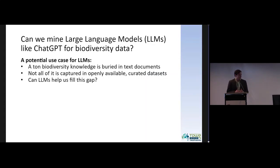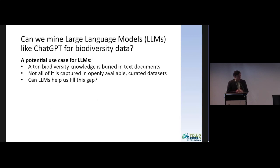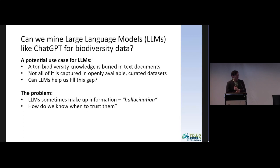This makes us wonder: can we actually mine large language models like ChatGPT for biodiversity data, or for whatever information they have stored in their memory? ChatGPT and other models can answer these questions because they're trained on essentially all of the internet — as much text as they possibly can get — including a lot of scientific and non-scientific sources, and apparently a lot of biodiversity information. This is exciting because not all of the information that ChatGPT knows is available in curated datasets. There's a gap between our curated datasets and the information contained in all the text on the internet. So can LLMs help fill this gap?